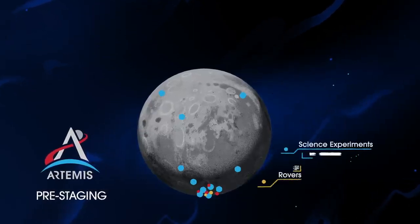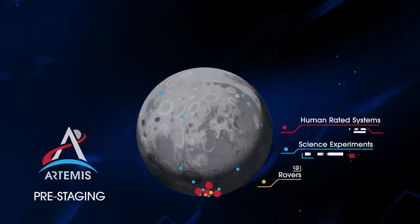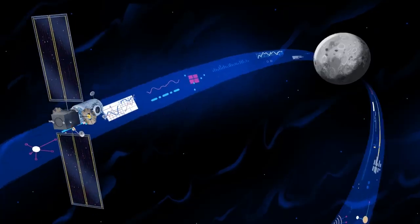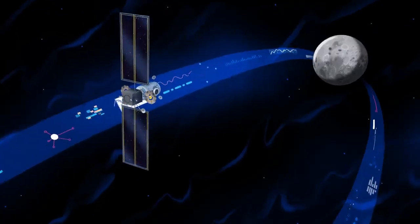Everything needed for lunar missions will be positioned in advance by commercial and international partners. This includes rovers, science experiments, and human-rated systems on the surface. But it also includes a dedicated lunar station in orbit around the Moon called Gateway.